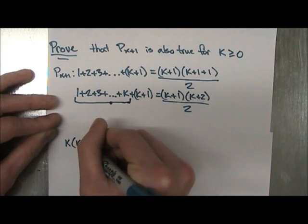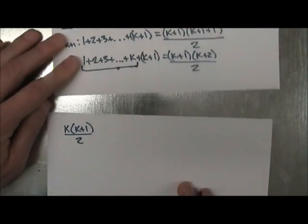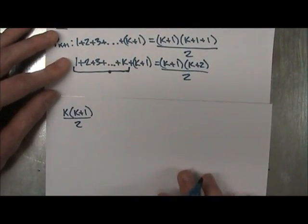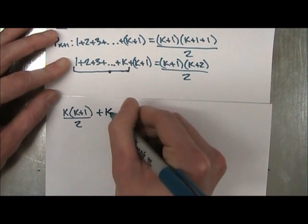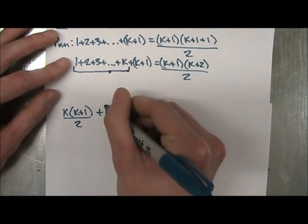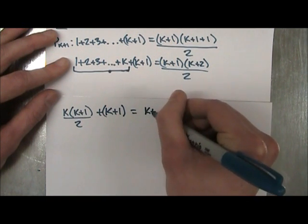k times k plus 1 over 2. Now remember, you still have this k plus 1 term here, so don't get rid of that. You have to make sure you add on to that. And then the right hand side is exactly the same. We haven't touched it yet.